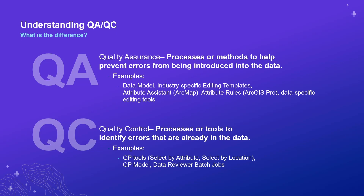Quality control, on the other hand, is where you are identifying errors that are already in your data — checks or tools that you run on your data to find existing errors. Some of the things I use are geoprocessing tools, select by attribute, and select by location, which are probably the two I most often use to validate my data and make sure required fields are populated. There's also an extension to ArcGIS called Data Reviewer, where you can create a Data Reviewer batch job that can validate your data.